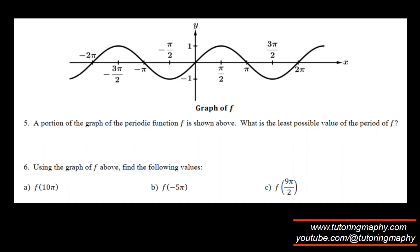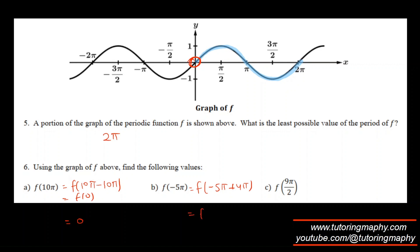For the third graph, the least possible period is 2π units. For f of 10π: since 10π is a multiple of the period 2π, subtracting 10π gives f of 0, and f of 0 is 0. For f of negative 5π: add 4π to get f of negative π, and f of negative π is 0.